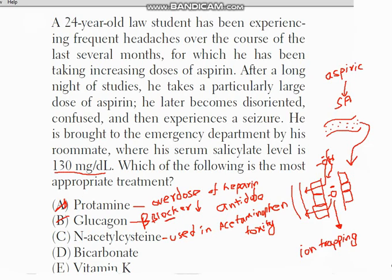What about bicarbonate? Yes — bicarbonate is a base which is used in the case of aspirin overdose. Vitamin K is used when there is an overdose of warfarin, because warfarin acts on an enzyme known as vitamin K reductase and inhibits the conversion of the oxidized form of vitamin K into its reduced form, which is essential for the activation of clotting factors. So whenever there is warfarin toxicity or overdose, we use vitamin K.